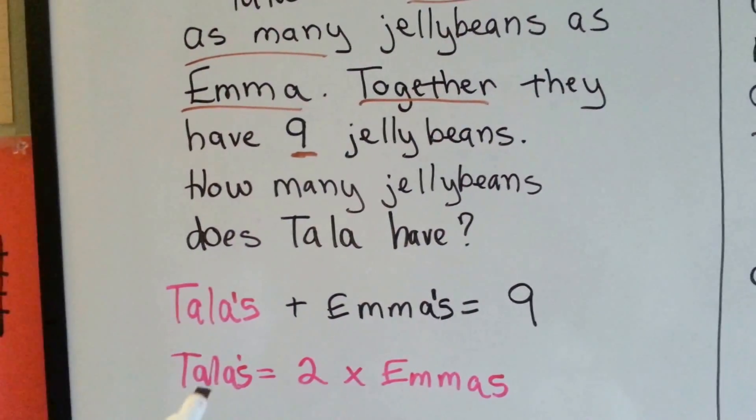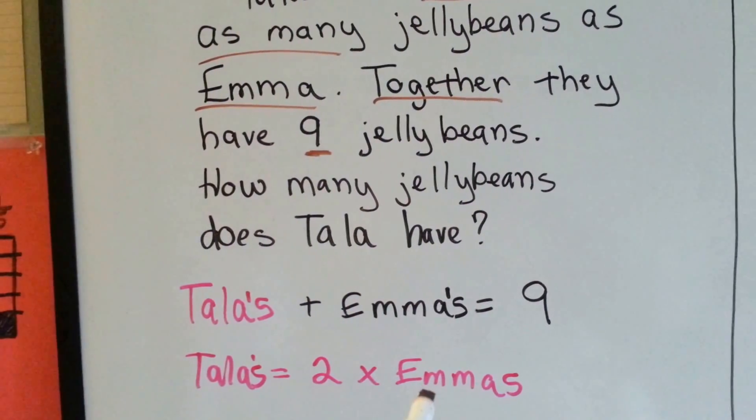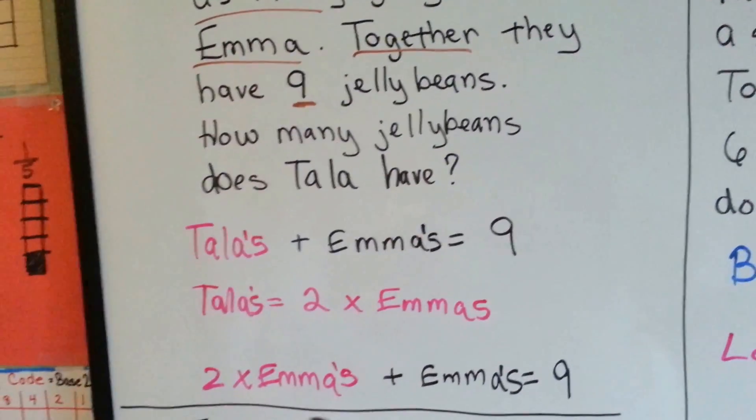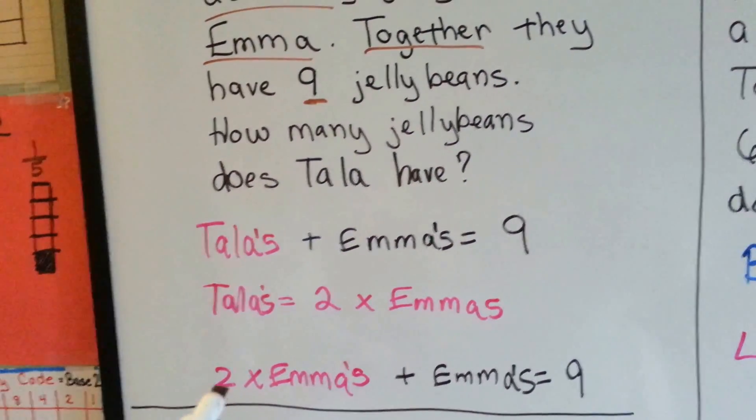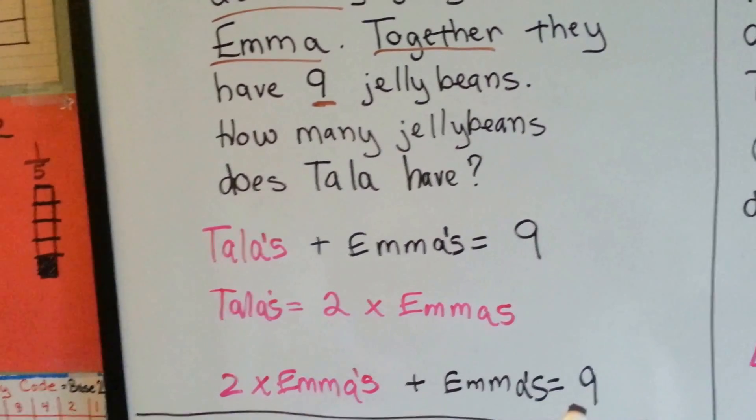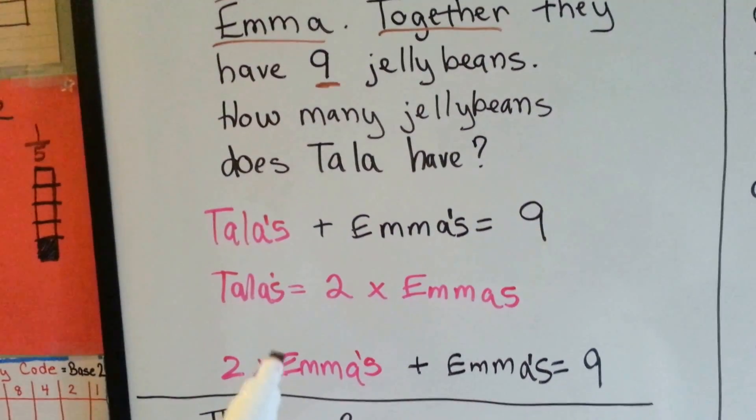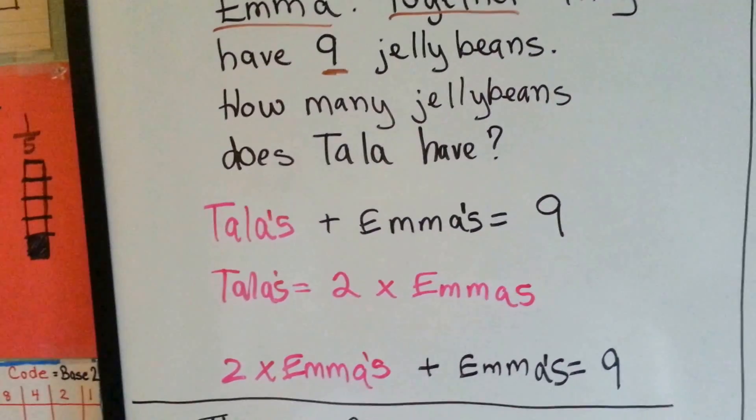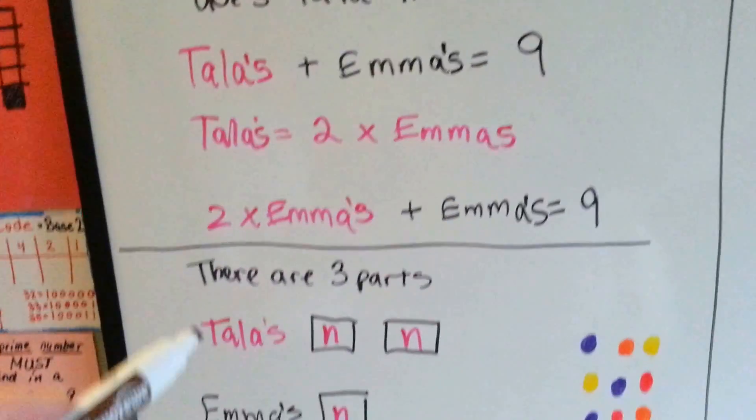Tala's by itself is two times Emma's. So the equation we're going to come up with is two times Emma's, which is Tala's, plus Emma's is nine. So whatever two times Emma's is, plus Emma's is the nine. So there's three parts.